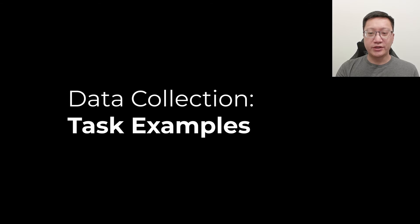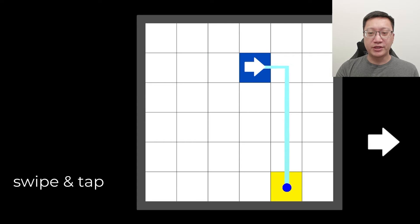To capture realistic and varied sequences, we had users perform four types of collection tasks. First are swipe and tap sequences where participants use swipes to traverse the grid.